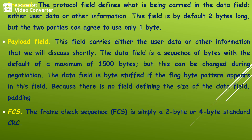The next field is the protocol field. The size of the protocol field is around two bytes, but the two parties can agree to use only one byte. This protocol field defines what kind of data is to be carried — whether actual user data or any other kind of information. The next field is the payload field, which carries data in terms of bytes. The maximum size of the payload field is around 1500 bytes, but this can be changed during negotiation. If the flag field appears within the data field, we can use the byte stuffing concept.